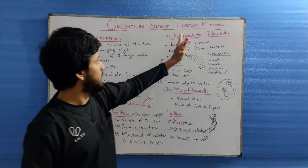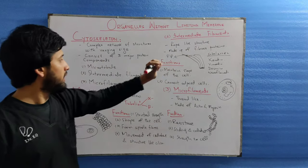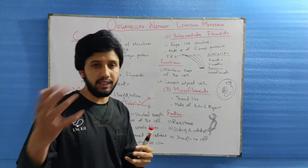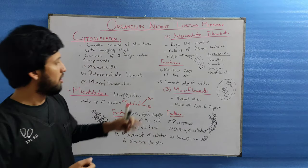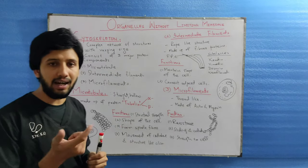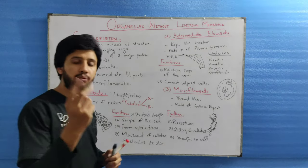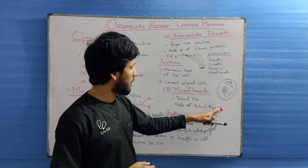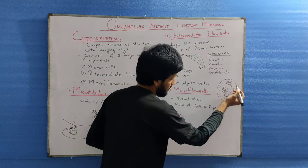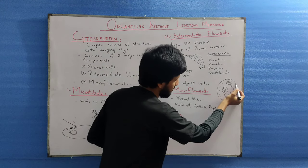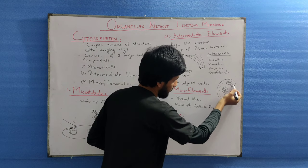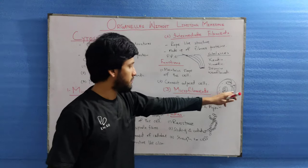The functions performed by intermediate filaments include maintaining the shape of the cell and connecting adjacent cells. The third component is the microfilament. It is a long thread-like structure made up of two proteins: actin and myosin. Actin is present in the ectoplasm, just beneath the cell membrane.